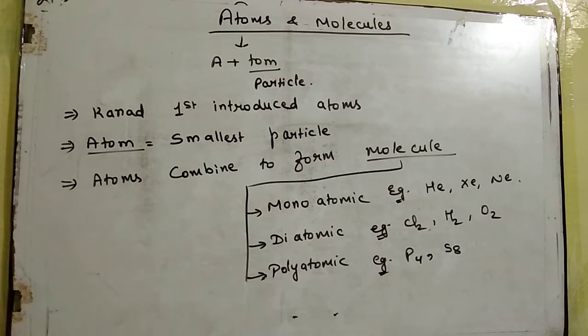So here also the same thing, ki jo atoms hai, jo similar atoms combine ho jate hain, to wo element banate hain. Now, molecule jo hai, unko alag-alag class me divide kiya hai, ki kitne atoms combine ho raha hai, uske basis pe they are classified into three types. Monoatomic, diatomic, or polyatomic. Mono means hota hai single and atomic means atom. To, aise atoms jo single molecules jo single atoms ke combine hone se bante hain, that is known as monoatomic. For example, helium, xenon, neon, krypton, argon, jitney bhi inert gases hai, they are monoatomic. Kyunki inki valency one hote hain, wo single form me hi rehte hain.